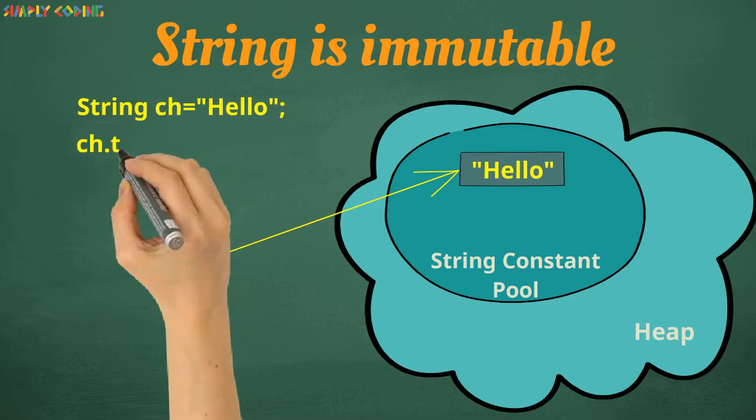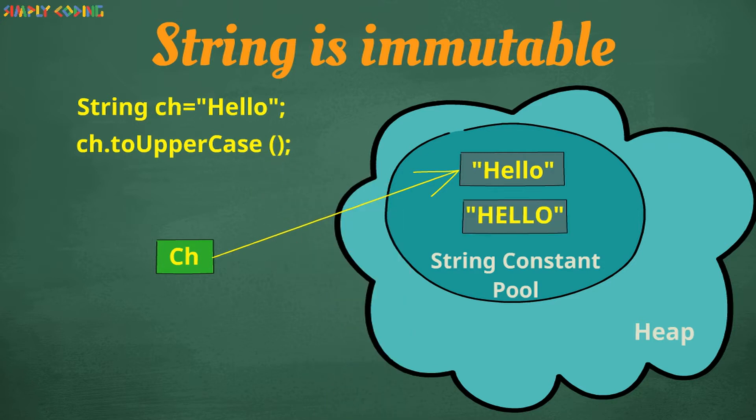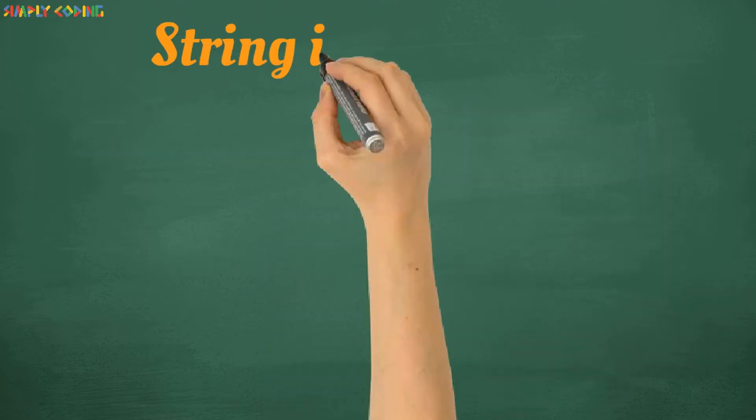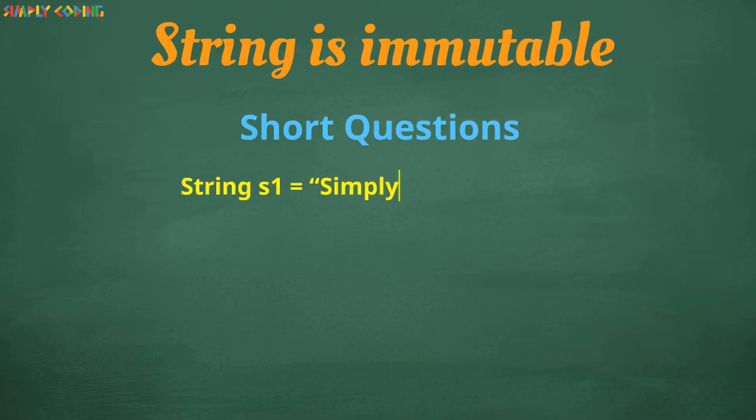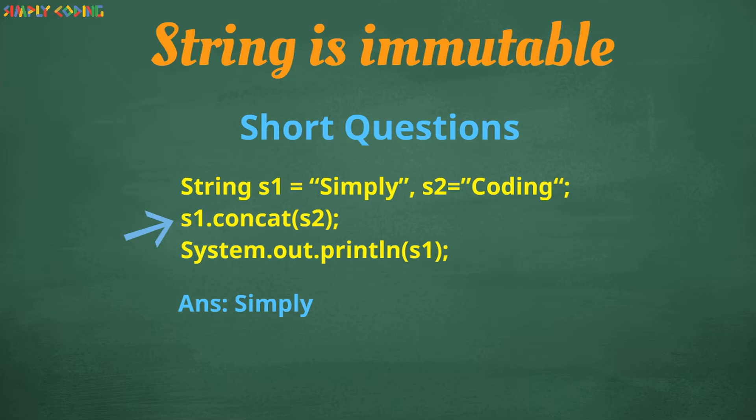So it is critical that you assign the return value to a new string variable, otherwise your string is lost. It is important you understand this concept, as it will be asked in short questions. For example, after using the concat function, if we did not assign the return value, the string remains the same.